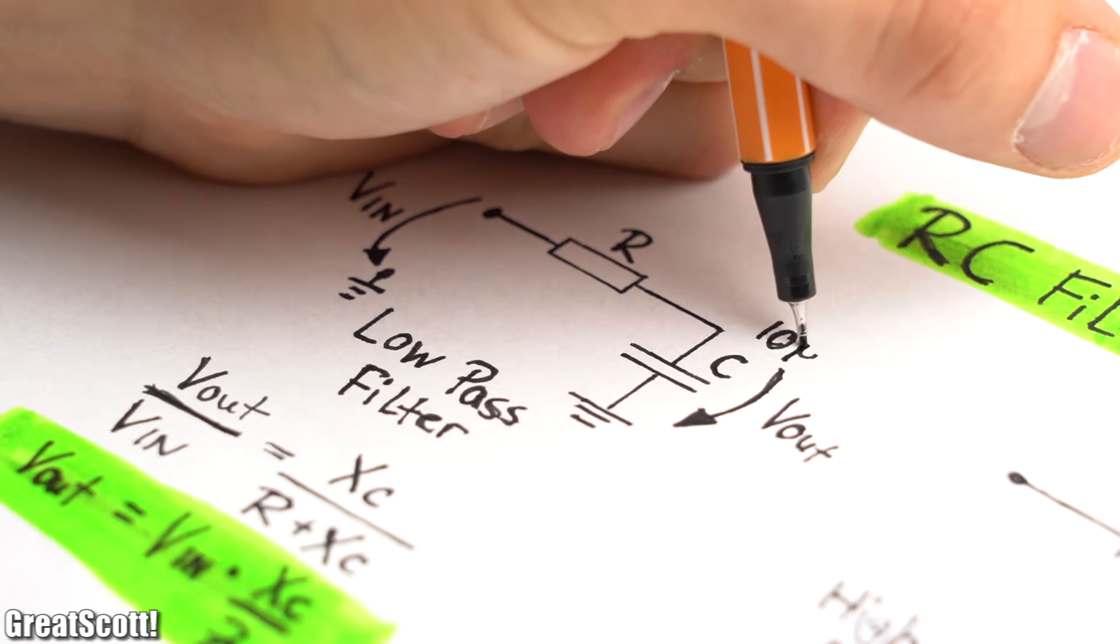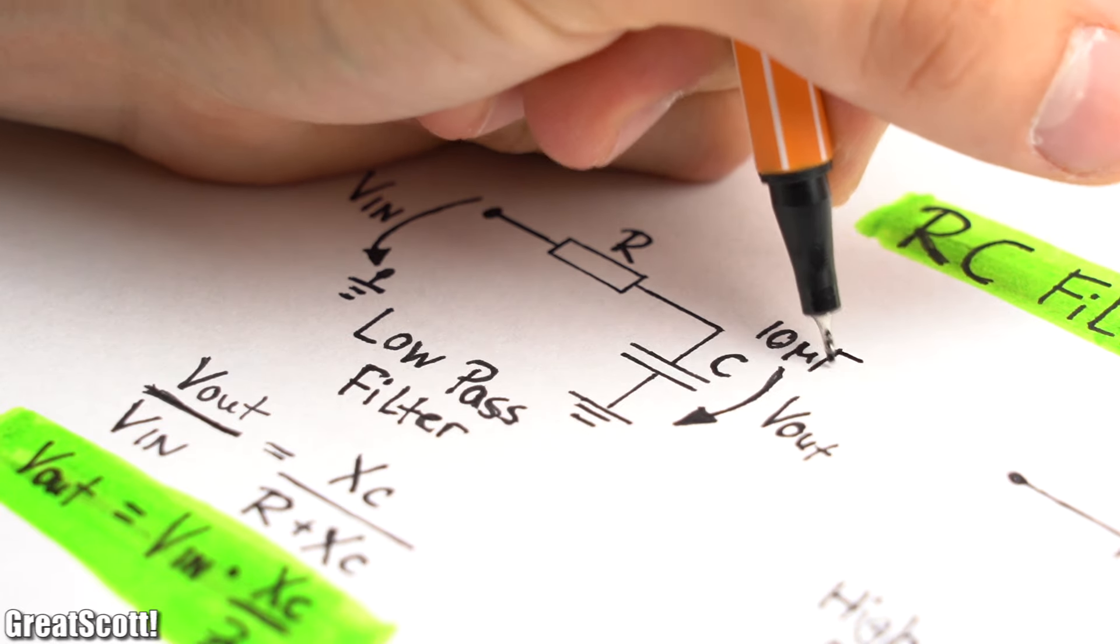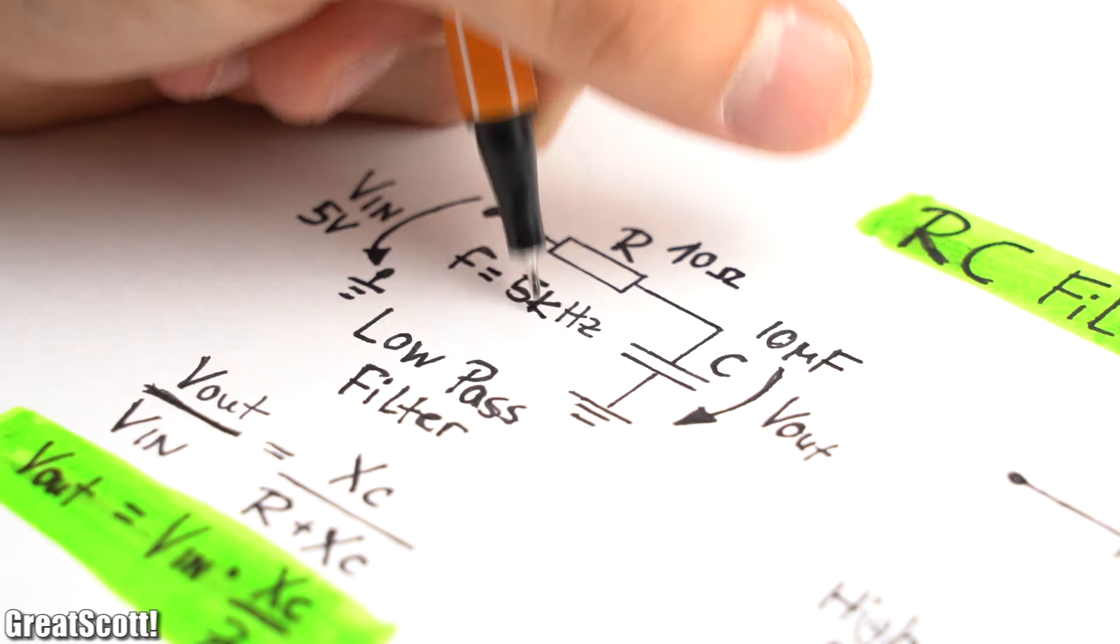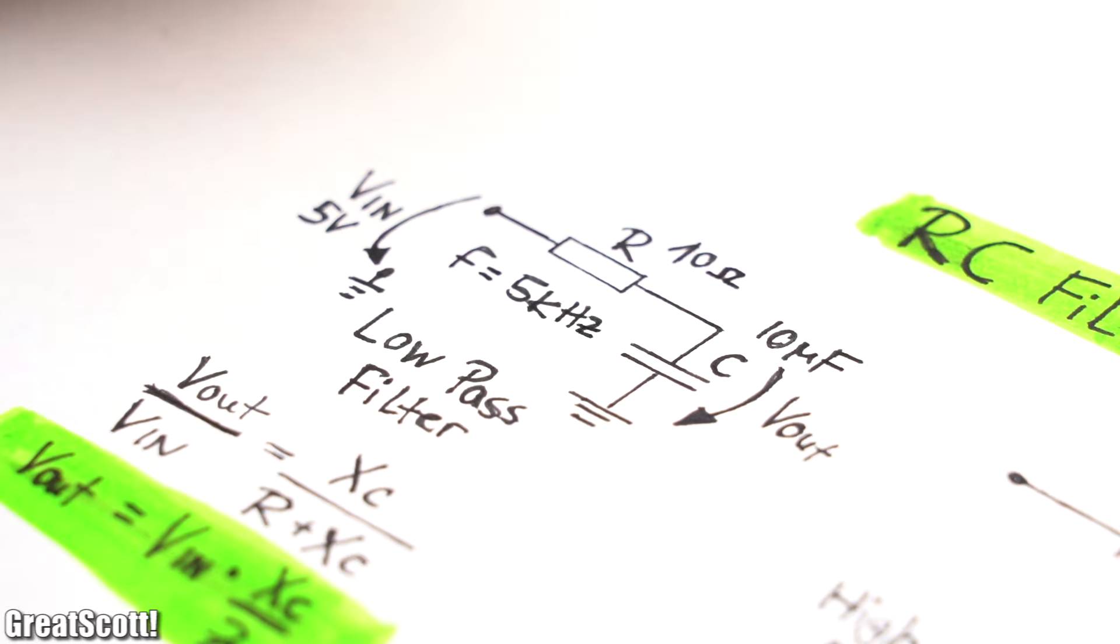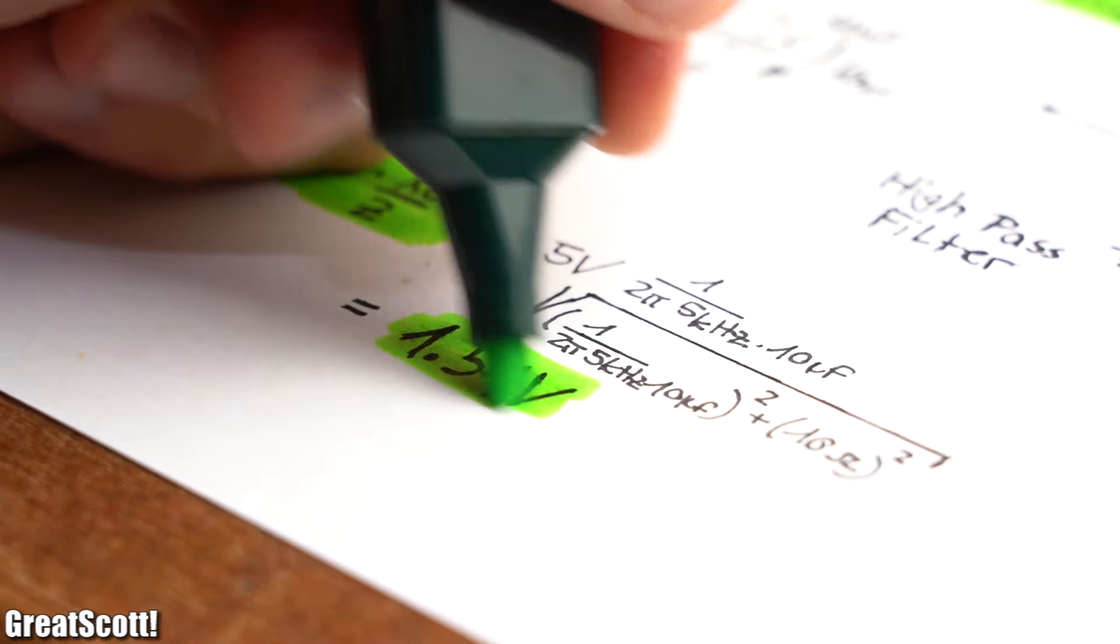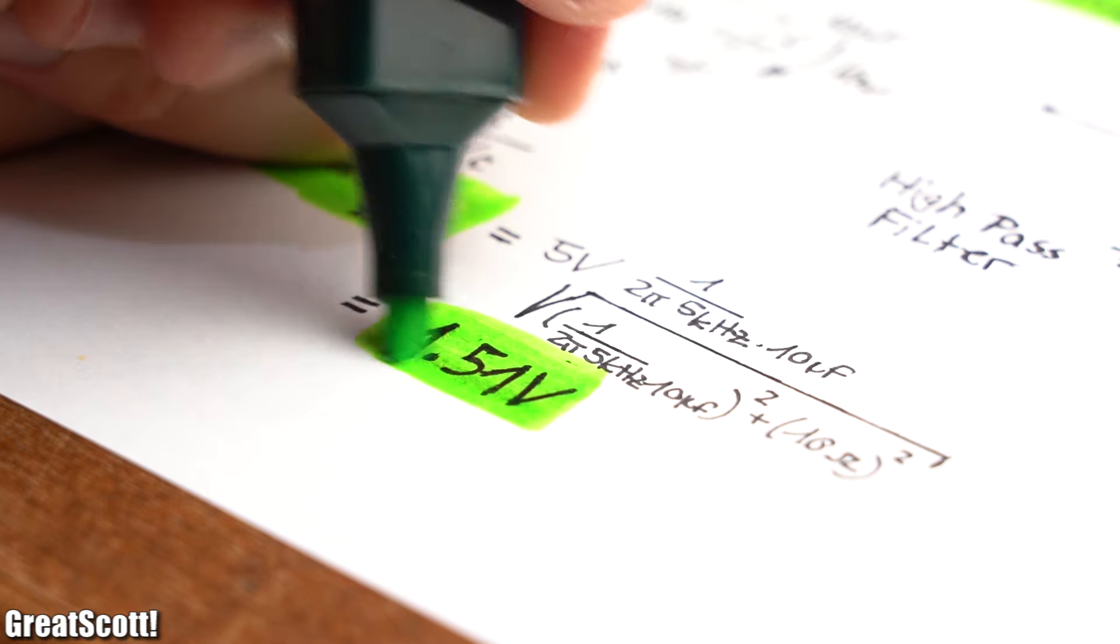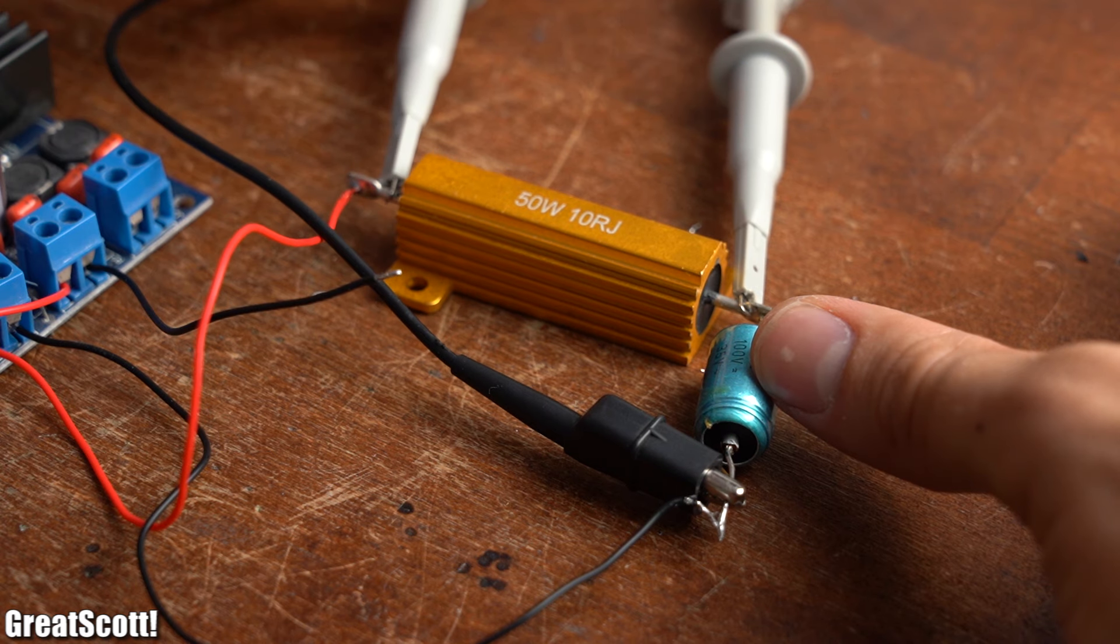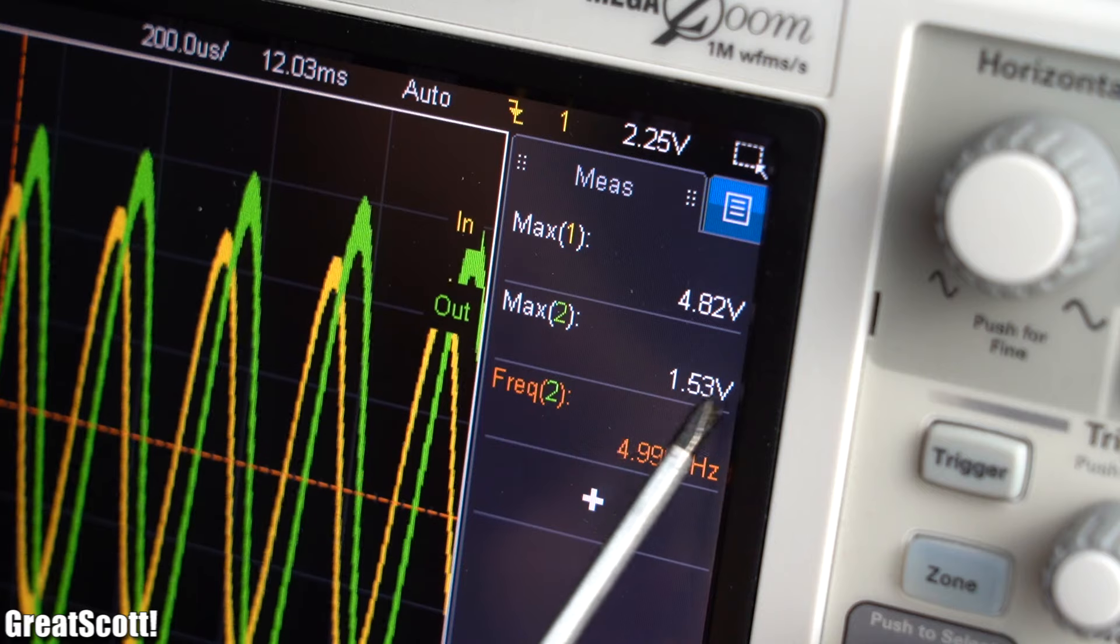As an example let's use a 10 microfarad capacitor, 10 ohm resistor, a max input voltage of 5 volts, and a frequency of 5 kHz, which should give us an output voltage of 1.51 volts. After building up the circuit and measuring the output voltage, we can see that our equation was in fact correct.